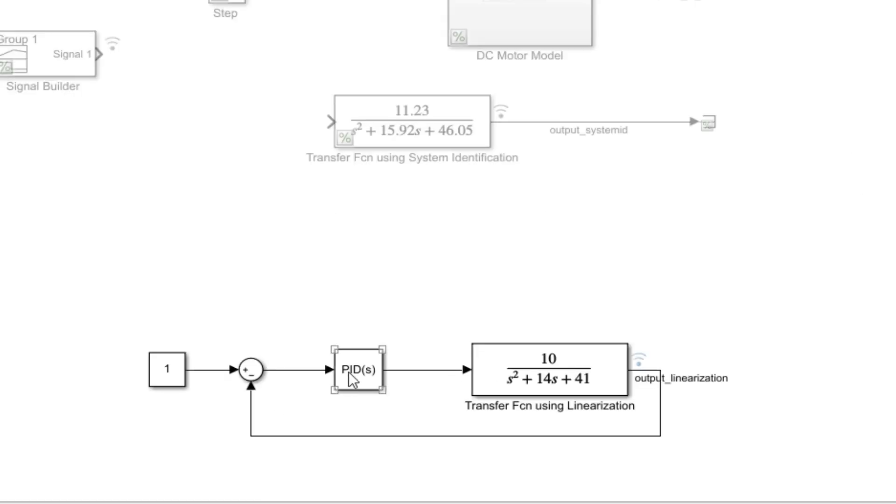Now, we can complete a closed loop system, add a PID controller and tune it for the models that we derived. In the next video, we will see how to tune this controller using different methods. So, we have seen a lot of different techniques to find the model of the system and I hope you do make use of one of these in your next project. See you next time.